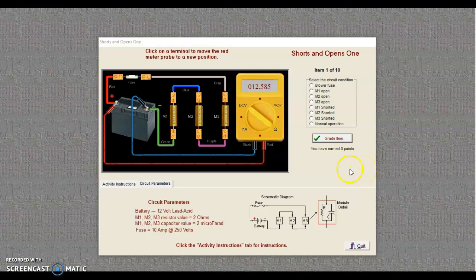So when approaching this problem, let's consider their possibilities. We could have a blown fuse. We could have an open module, one of the modules open, or one of the modules could be shorted. Or we could just be seeing a situation that is a normal operation. Know your source voltage going into this and consider what is between the probes as you probe the circuit.